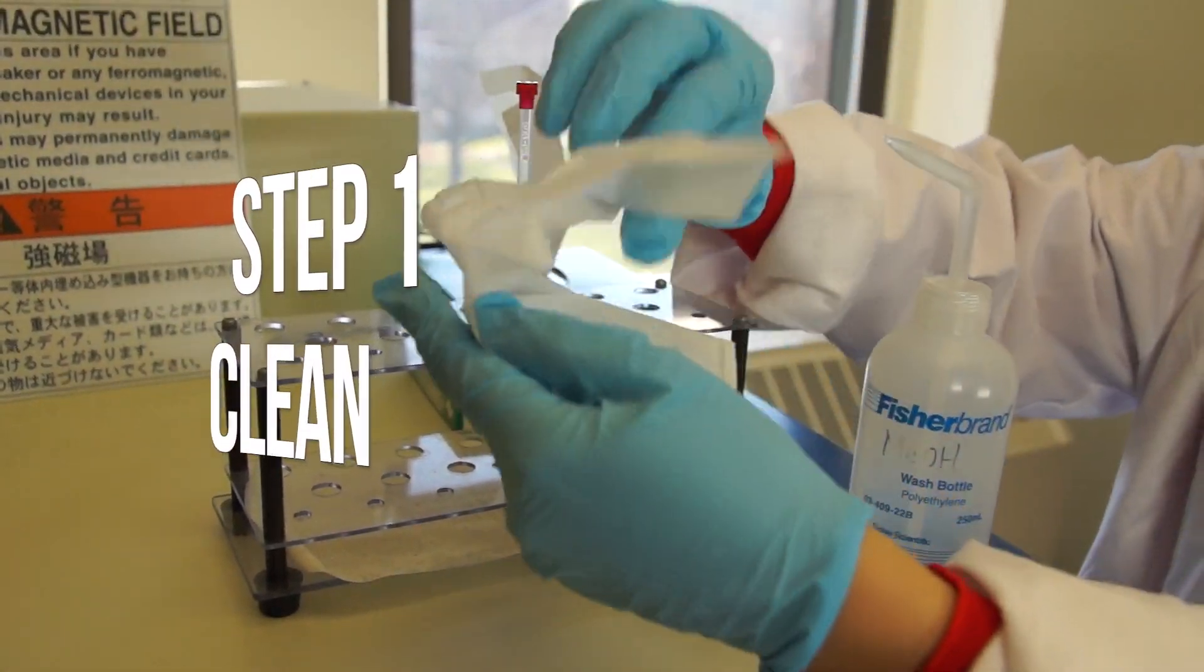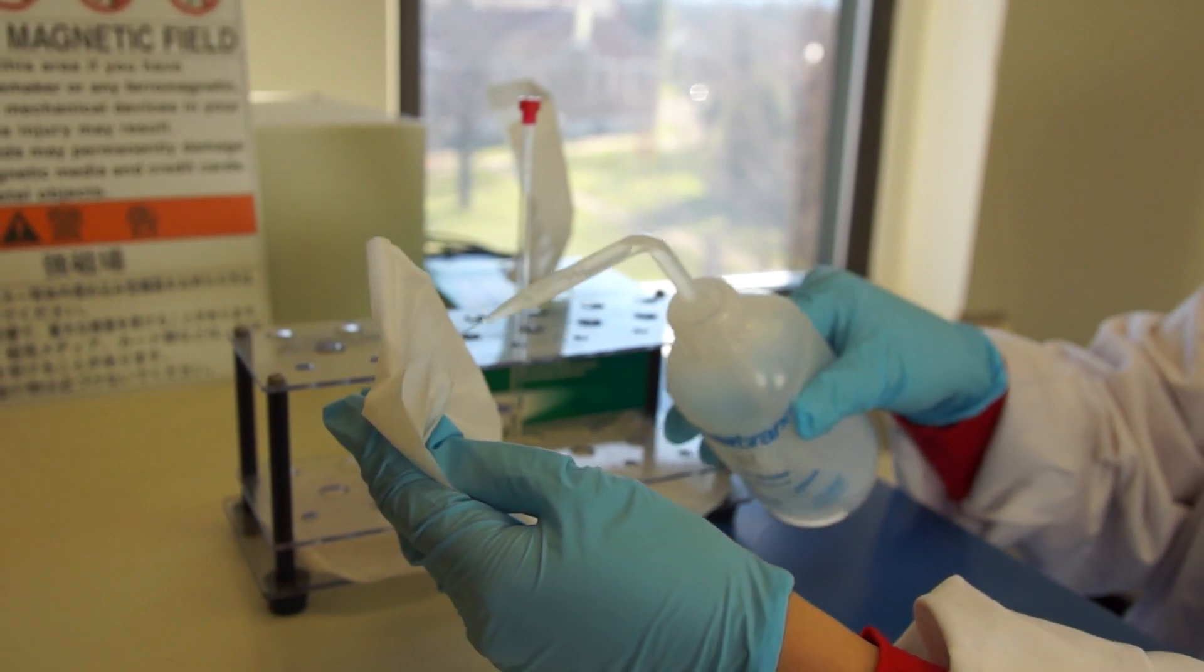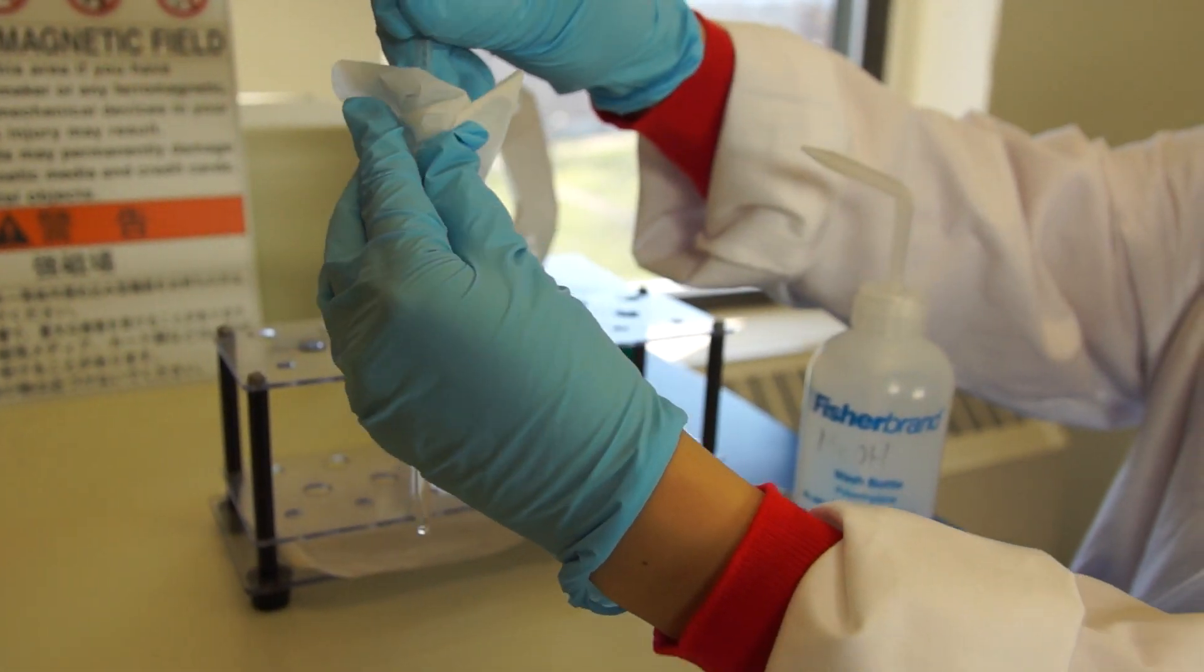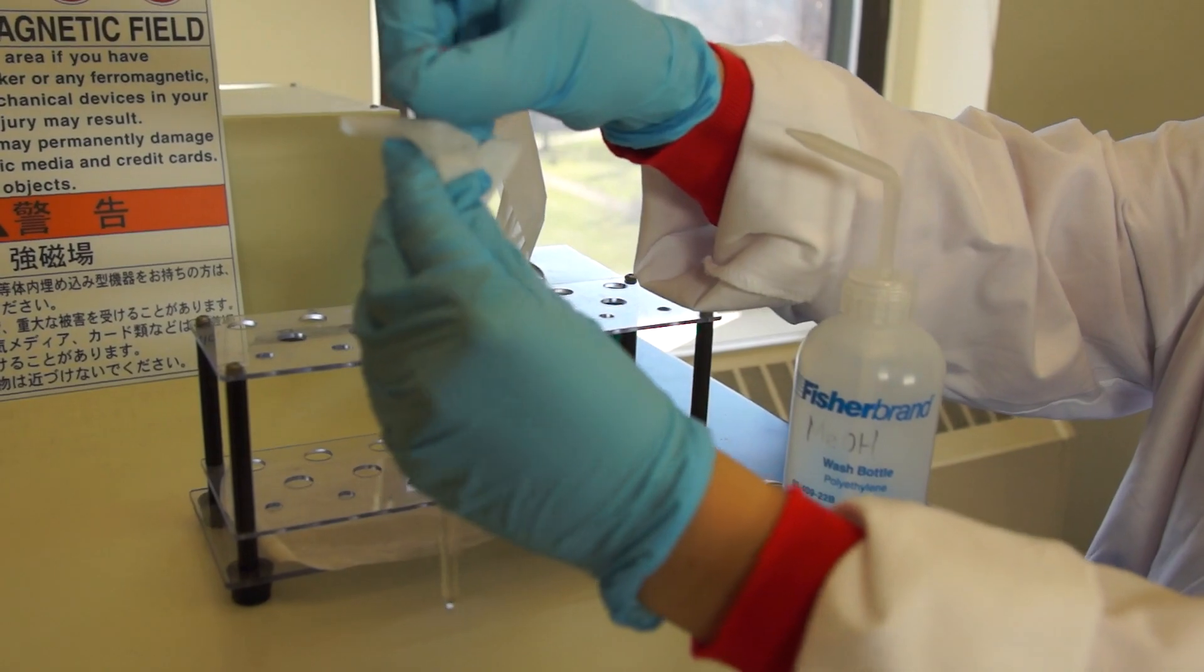The first step is to clean your NMR sample. Spray some methanol onto a kim wipe, just a couple drops, and then wipe the NMR tube with the methanol.